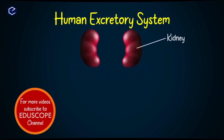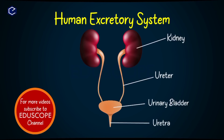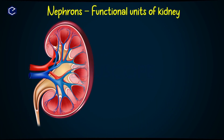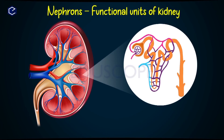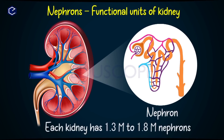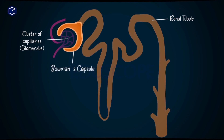The human excretory system has two kidneys, two ureters, one urinary bladder, and one urethra. Nephrons are the structural and functional units of the kidney. These are tiny structures that filter the blood.